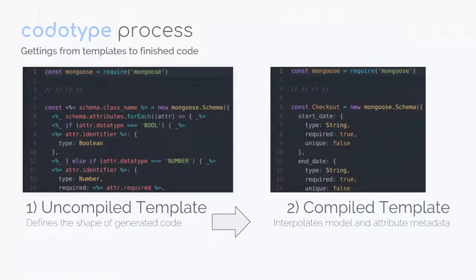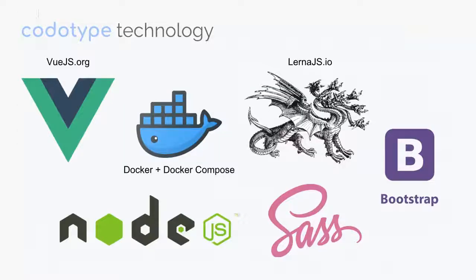The process of generating code is simple — we just have templates. You see things like schema.class_name and schema.attributes, where we iterate over each attribute. For example, line seven basically says: if the attribute's data type is boolean, output a little bit of text that generates an attribute of type boolean. What you see on the right is the actual code produced from this process — for a checkout model with a start_date that's a string (should have been date type) and a required field. It's really just taking basic templates and pushing your data into them.